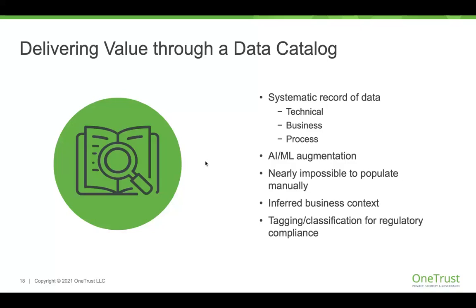AI and ML can help provide business context. The business can directly collaborate — rate data sets, comment on them, flag things as good or bad — and data stewards can be proactively notified of that feedback. You can also tag and classify information for regulatory compliance, such as identifying what information is in scope for GDPR for records of processing, or what personal information is in scope for CCPA so it surfaces up in the event of a deletion request from a California consumer.